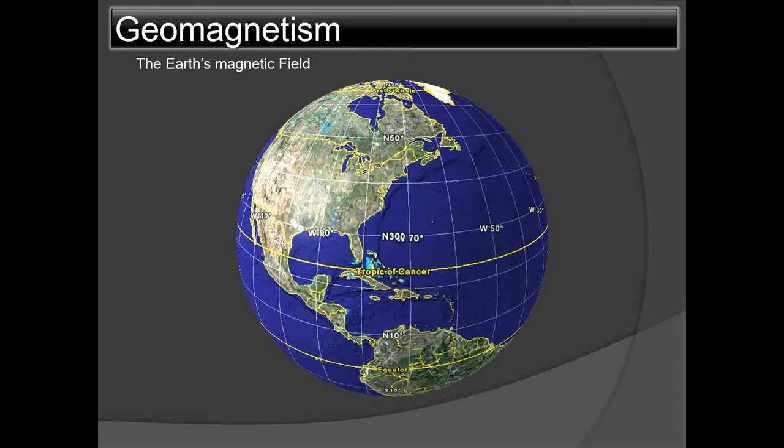We also covered dip, which is the angle that a magnetic needle makes with the horizontal when freely suspended. It is also called magnetic inclination.